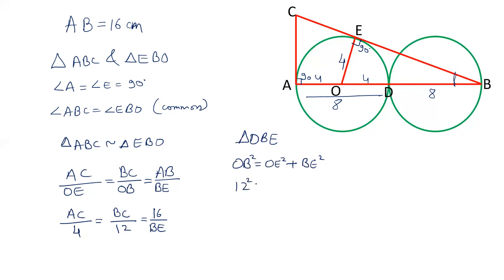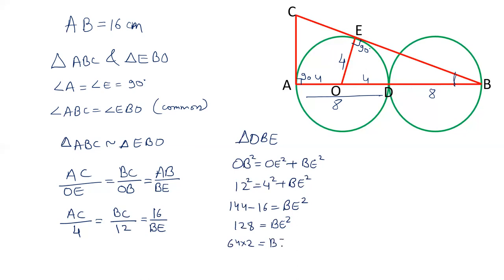OB is 12 and OE is 4. So 12² = 4² + BE², giving 144 = 16 + BE². Therefore BE² = 144 − 16 = 128, which equals 64 × 2. The square root of 64 is 8 and the square root of 2 is √2, so BE = 8√2. We can now put this value into our ratio to find AC.